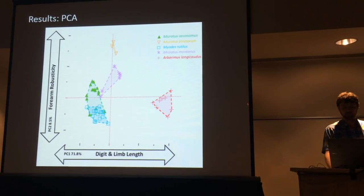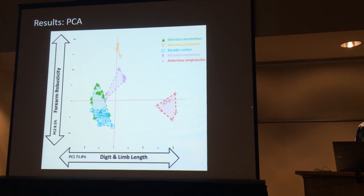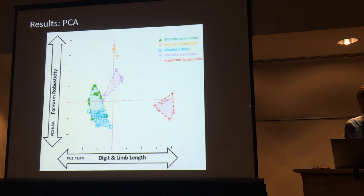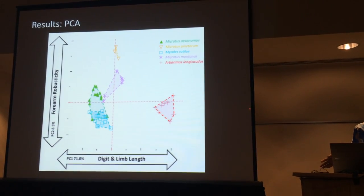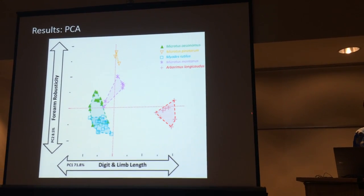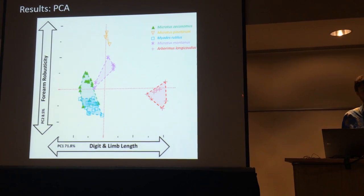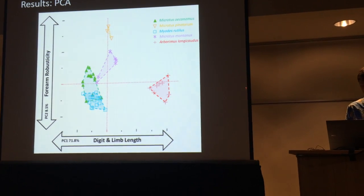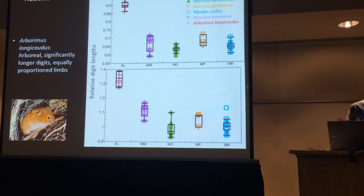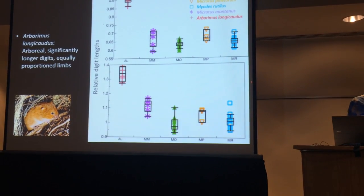The result of the first two components of the PCA immediately shows that there is variation associated with the species — it's not just a bunch of overlap. The first component, about 72% of the variation, is strongly loaded with digit length, and this clearly separates one of our arboreal species way off to the right. The second component, about 8.5% of variation, is mostly based around forearm robusticity, and this actually separates — in orange — Microtus pinetorum, a fully semi-fossorial species, as well as Microtus montanus in pink, which also burrows a lot in its alpine habitat. On top is relative finger length, and on the bottom is relative toe length, and you can clearly see that the arboreal species has much longer fingers and toes than the rest.